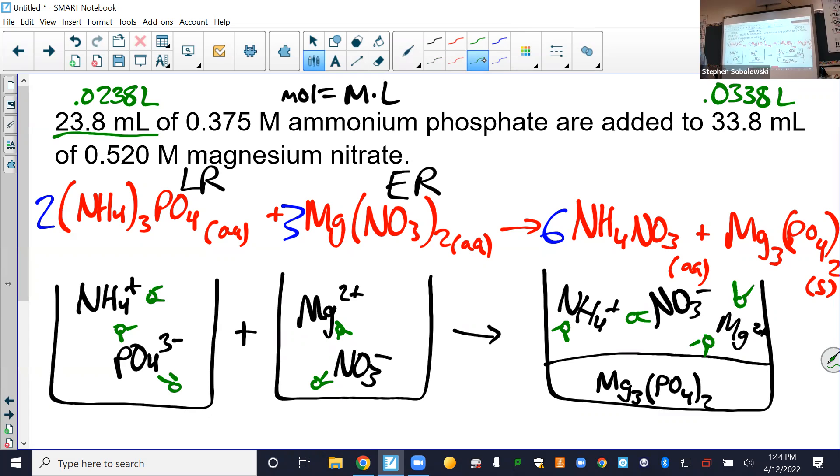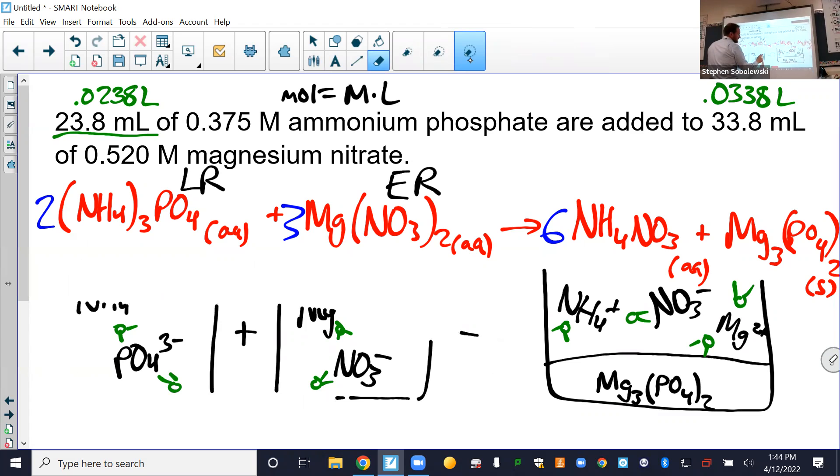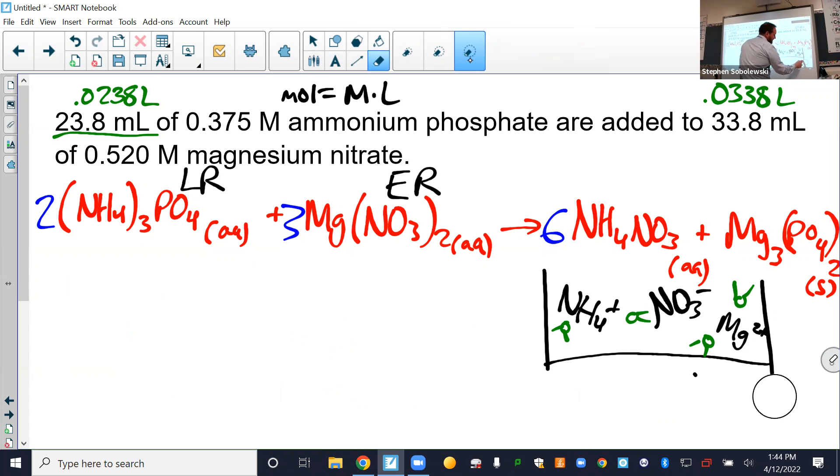Next is the supernatant test. Let me erase beakers one and two for this. And I also want to deal with just the supernatant for this. So I'm going to erase my precipitate. Remember, the precipitate is the solid that forms and generally sinks to the bottom. The supernatant is the solution above that, which contains your aqueous ions. So it's always going to be the two ions from your aqueous product. In our case, the aqueous product is ammonium nitrate. And it's going to contain the third ion from your excess reactant, if you have an excess reactant. So in this case, magnesium.